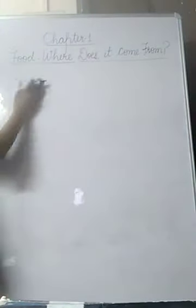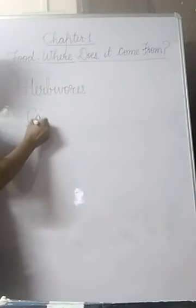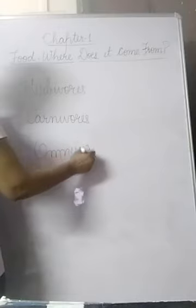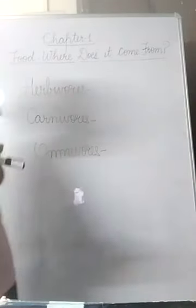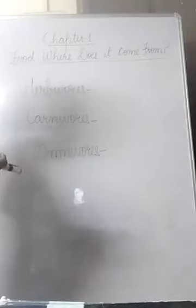We are all aware that different kinds of animals eat different kinds of food. On the basis of the food they eat, animals are classified as herbivores, carnivores, and omnivores. Herbivores are animals which eat only plants — for example, cow, buffalo, goat, and sheep. They have sharp teeth in the front and strong jaws at the back to grind food. Carnivores eat only flesh of other animals — for example, tiger, lion, and wolf.